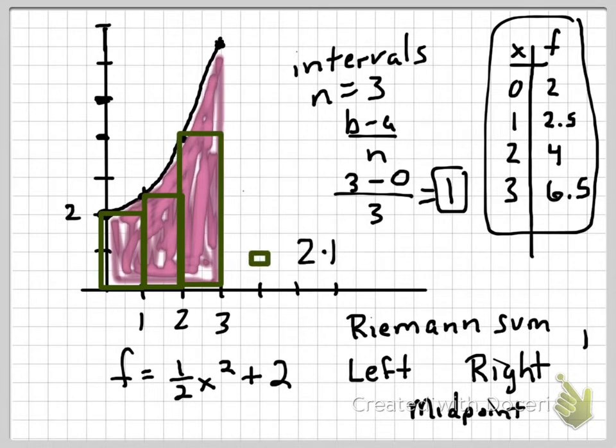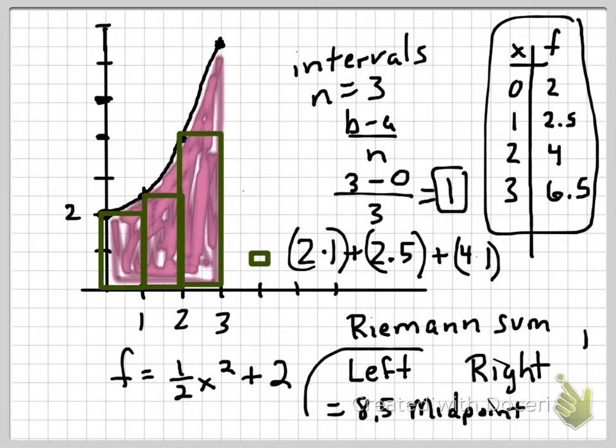2 times 1, plus 2.5 times 1, plus 4 times 1. So the other way that you can note that, 2, 2.5, 4, we're using the first three values. So you'd add those up and that would be giving your left Riemann sum, and that would be, what, 4.5, 8.5. That's our left Riemann sum, we use the left most end points.